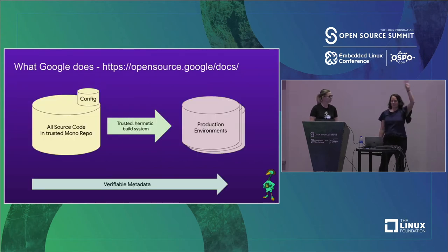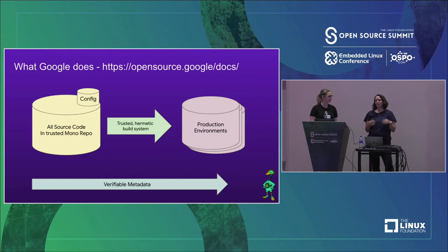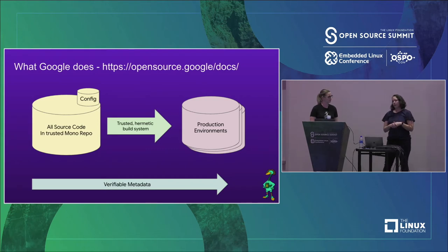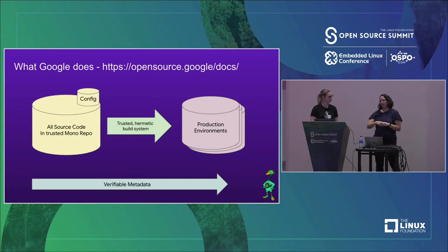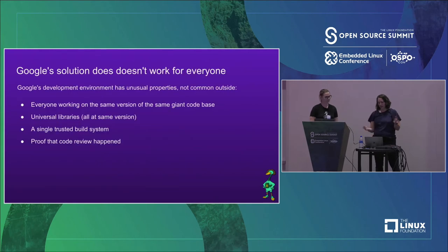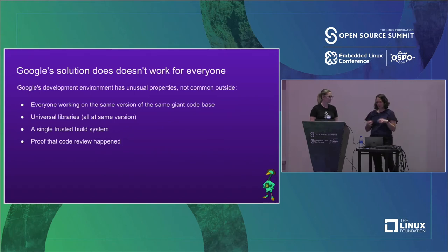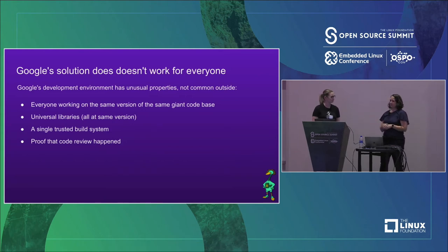Google is pretty famous for having a monorepo, so even third-party dependencies come into this monorepo. We have a trusted build system with very high security requirements. We're capturing metadata along the entire supply chain for these artifacts, and we can go back and verify all the properties of them. We know when there's a change that's pushed out, we know where the code is running, we can see what's happening. Any organization can cobble something like this together with enough time, though it doesn't work for everyone - for example, you're limited to one version of something.